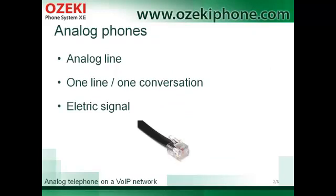What is an analog phone? Analog phones are phones that use analog telephone lines. An analog telephone line is a kind of telephone technology where one line can handle one conversation at a time. It means that when the line is in use, a busy signal can be heard.